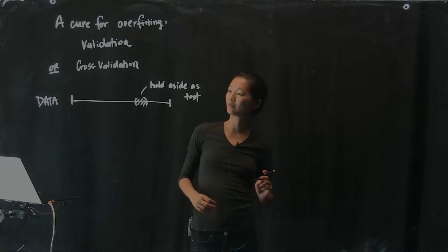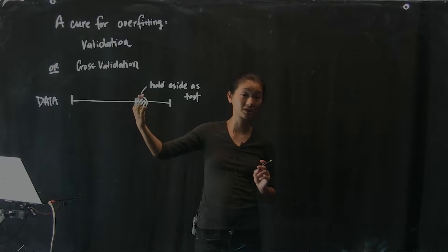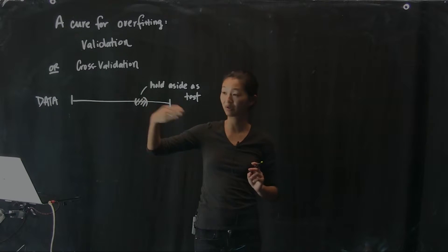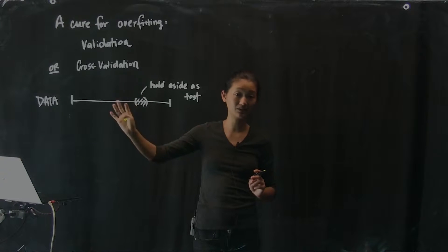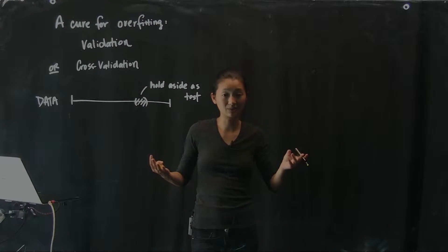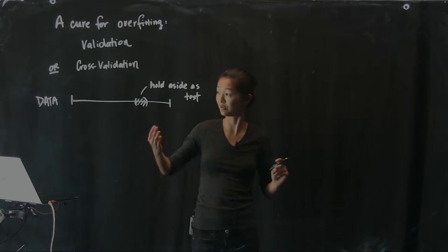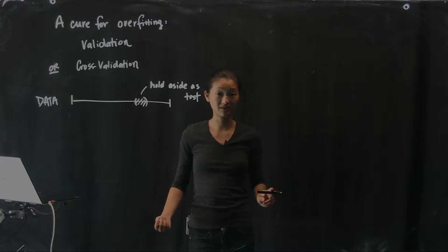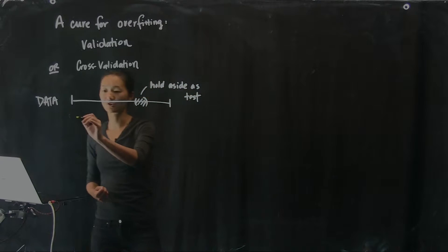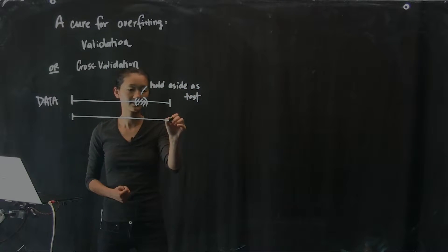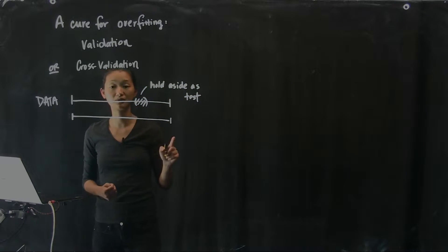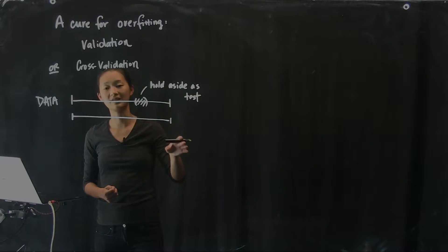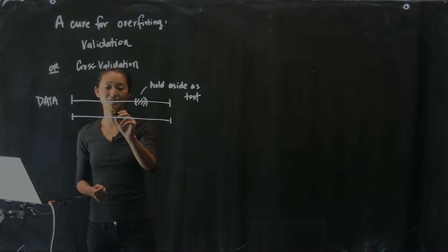You might ask: how do I decide which section of data to hold aside? There's really no right answer — I'm doing it randomly. You can hold aside any data you want. But wouldn't doing this over and over again give you different results? Yes, it would. So the way we handle that is by doing this exact same procedure over and over again randomly, withholding different pieces of data as the test data every single time.